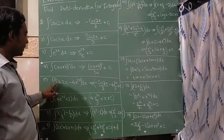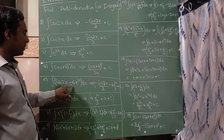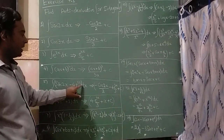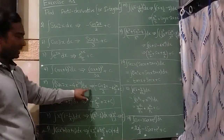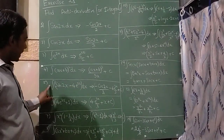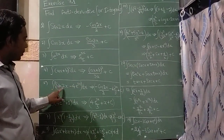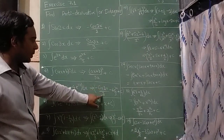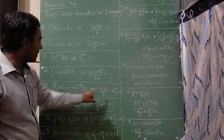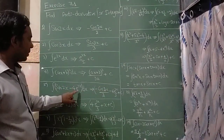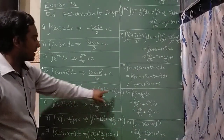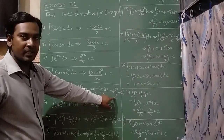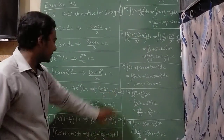The fifth question is integration of (sin 2x minus 4 e raise to 3x) dx. The answer is: sin 2x integrates to minus cos 2x upon 2, minus integration of e raise to 3x which gives e raise to 3x upon 3, plus c.